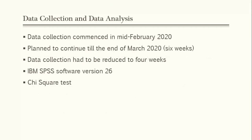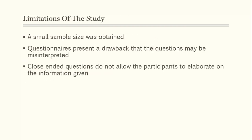Data collection started in mid-February. The plan was to continue until the end of March; however, due to the situation, it ended up being four weeks rather than six. In order to analyze the data, the software IBM SPSS was used, and the chi-square test was used for any correlations. Limitations of the study include a small sample size, and questionnaires present a drawback that questions might be misinterpreted. In order to limit this, a pilot study was done and validity and reliability testing were also conducted. Close-ended questions do not allow participants to elaborate; however, there was some space for them to add their own opinions.